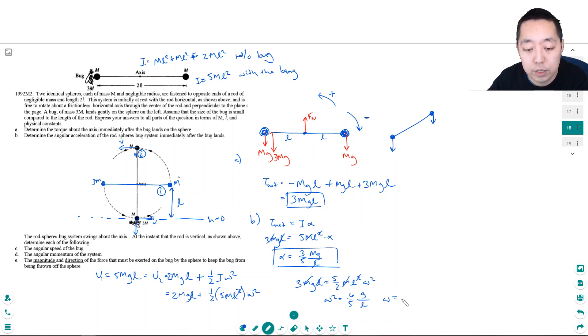So omega is equal to the square root of six-fifths g over l. That's the angular speed.